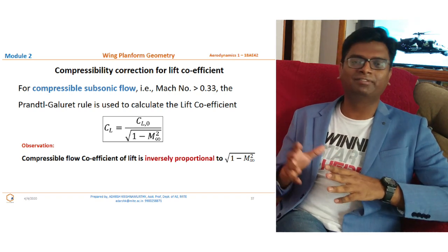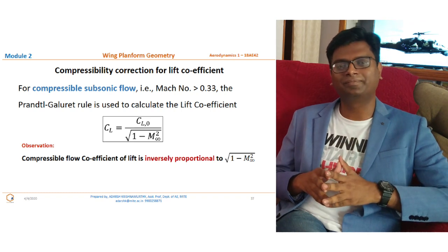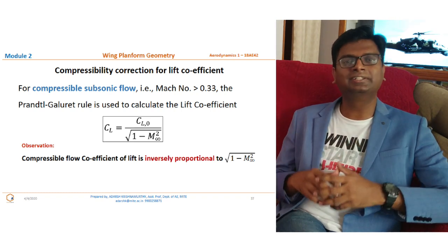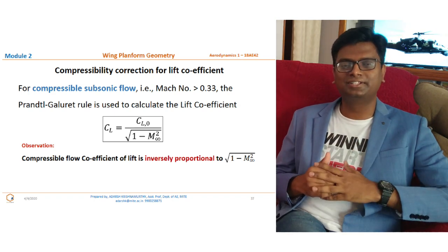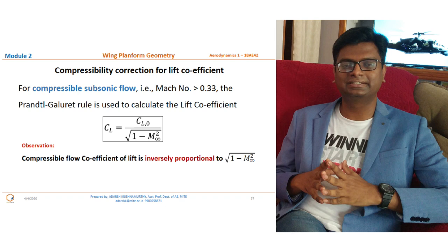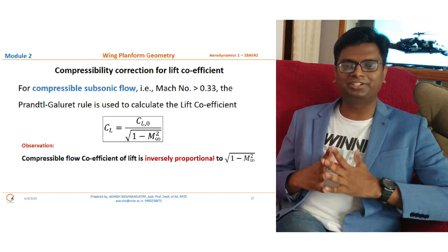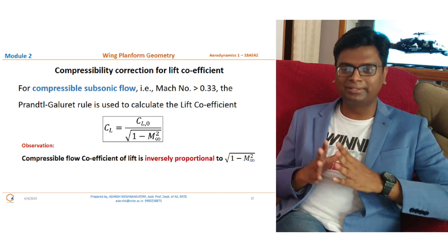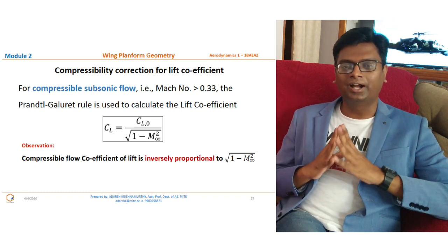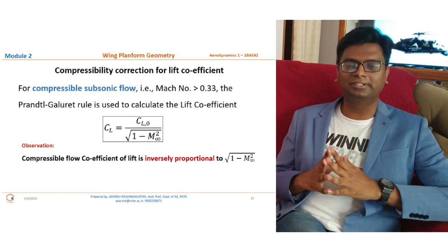This coefficient of lift variation with Mach number applies to one particular angle of attack — if the angle of attack changes, the curve changes and Cl₀ changes. The key observation is that in compressible flow, the lift coefficient is inversely proportional to √(1 − M∞²), so it increases with increasing Mach number.